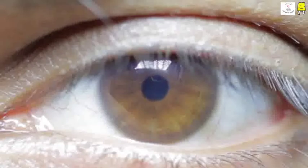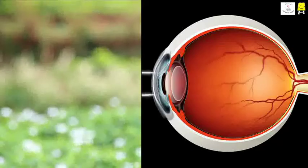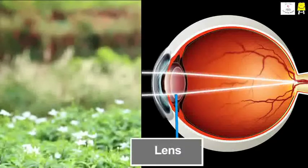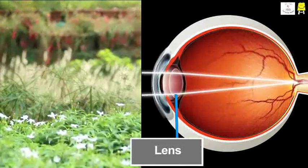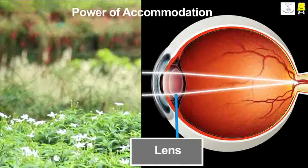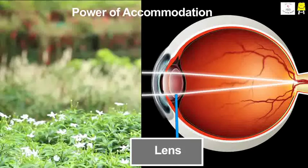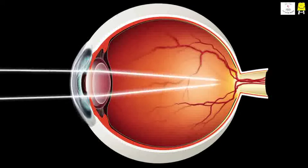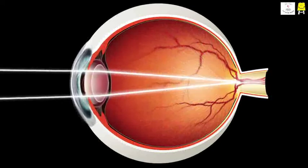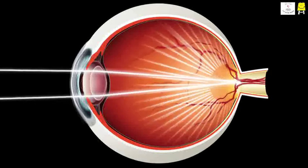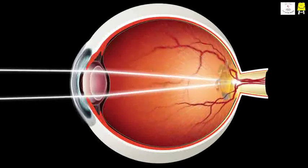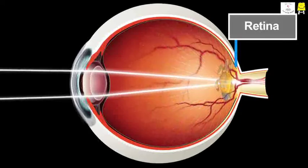In the dark, the pupil dilates or increases in size so as to let in the maximum amount of light. The lens in our eyes can also change its size to create a focused image on the retina — this is called the power of accommodation. The ciliary muscles attached to the lens contract or relax, changing the curvature of the lens. This changes the focal length of the lens and a clear image is formed on the retina.